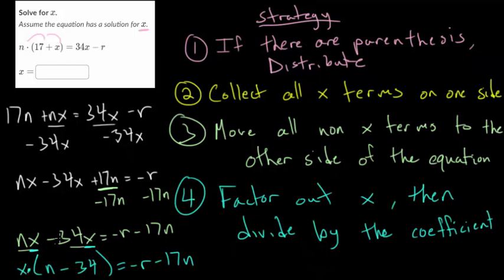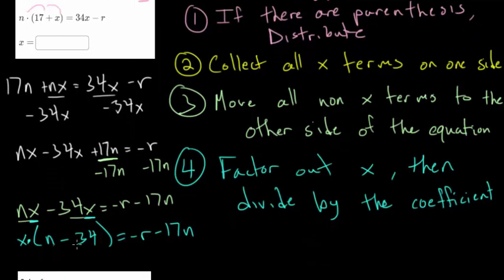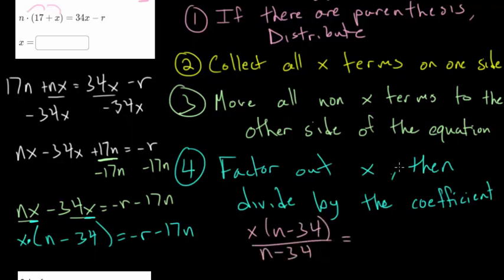And we don't know what n is but we know it's a number. If n was 40 then we'd have 40 minus 34 which would be 6 or 6 times x. And we would have to divide through by that 6. But since we don't know what n is we're going to have to leave it generally. But we can divide by that n minus 34. So let me rewrite all that. We have x times n minus 34. And we're going to divide both sides by n minus 34. So you have minus r minus 17n over n minus 34.